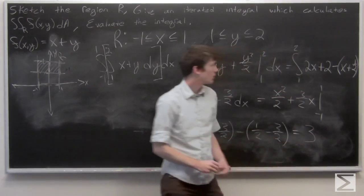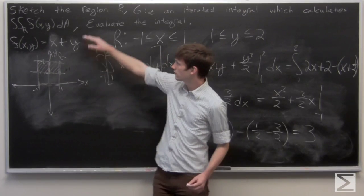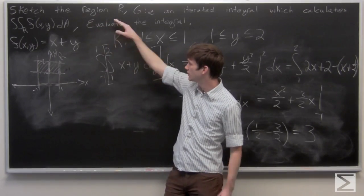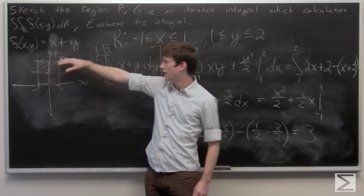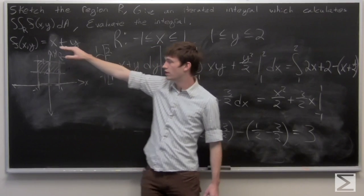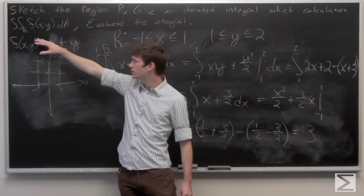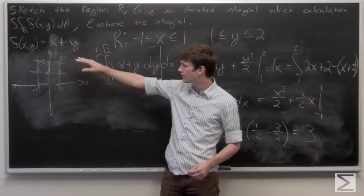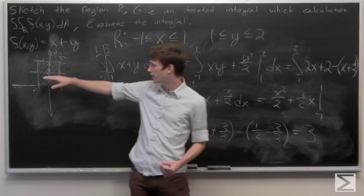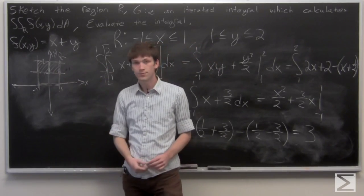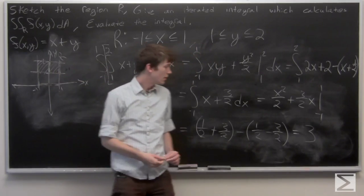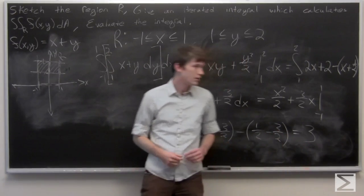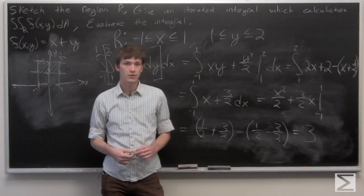So we were given our region R, we sketched it, and then we used that to calculate the double integral of our function f of x, y over that region R. We determined that the double integral evaluates to 3.